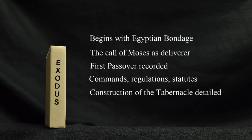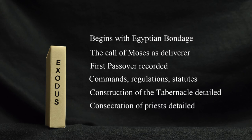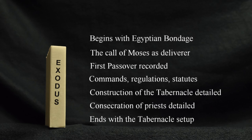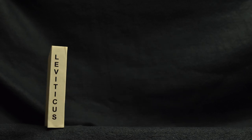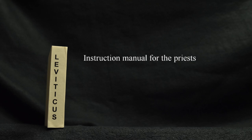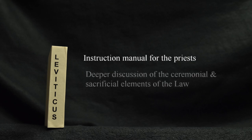There are also instructions for the consecration of the priests, their garments, and service. The book ends with the tabernacle being set up and filled with the glory of God. Leviticus is an instruction manual for the priests, including a deeper discussion of the ceremonial and sacrificial elements of the law.